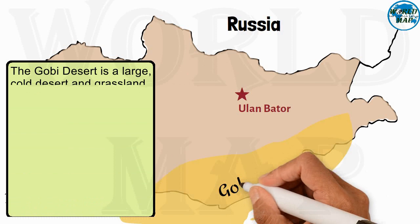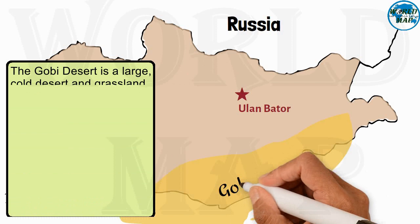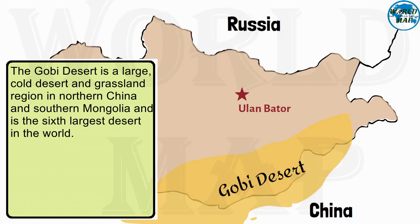Gobi Desert. The Gobi Desert is a large, cold desert and grassland region in northern China and southern Mongolia, and is the sixth largest desert in the world.